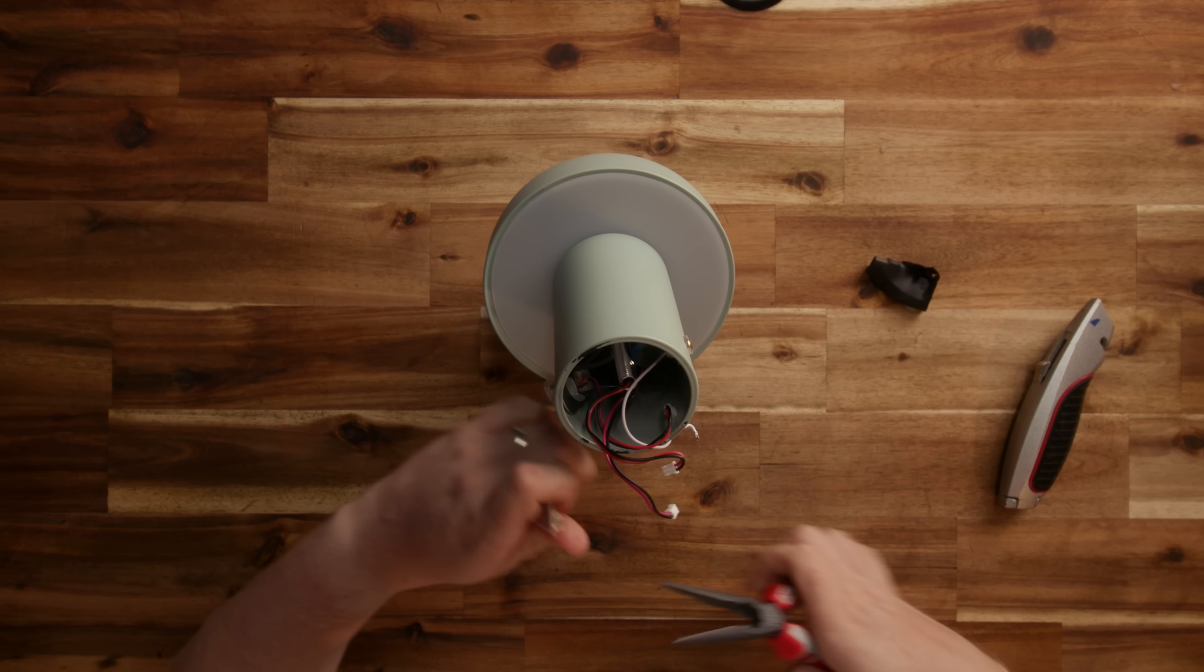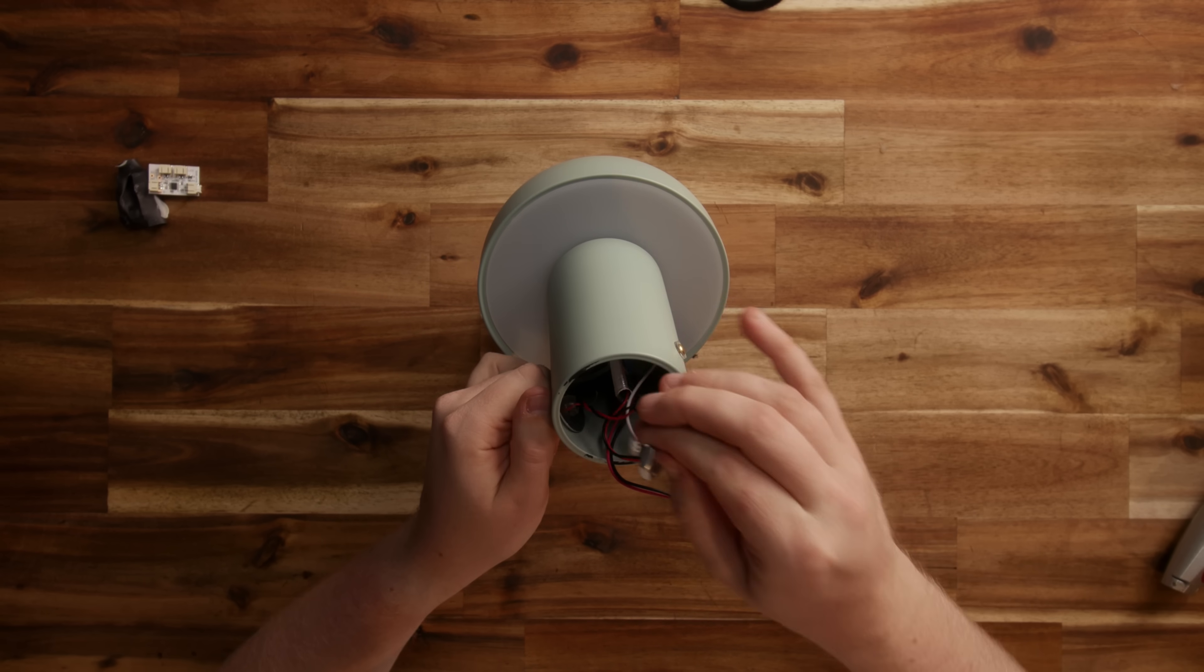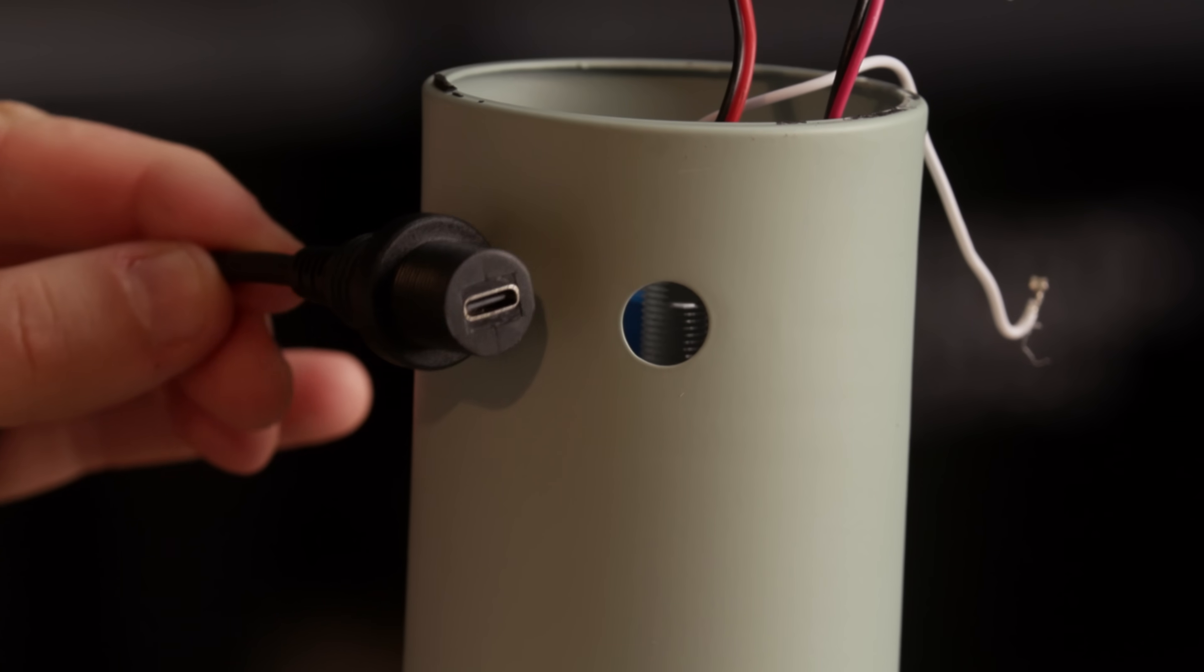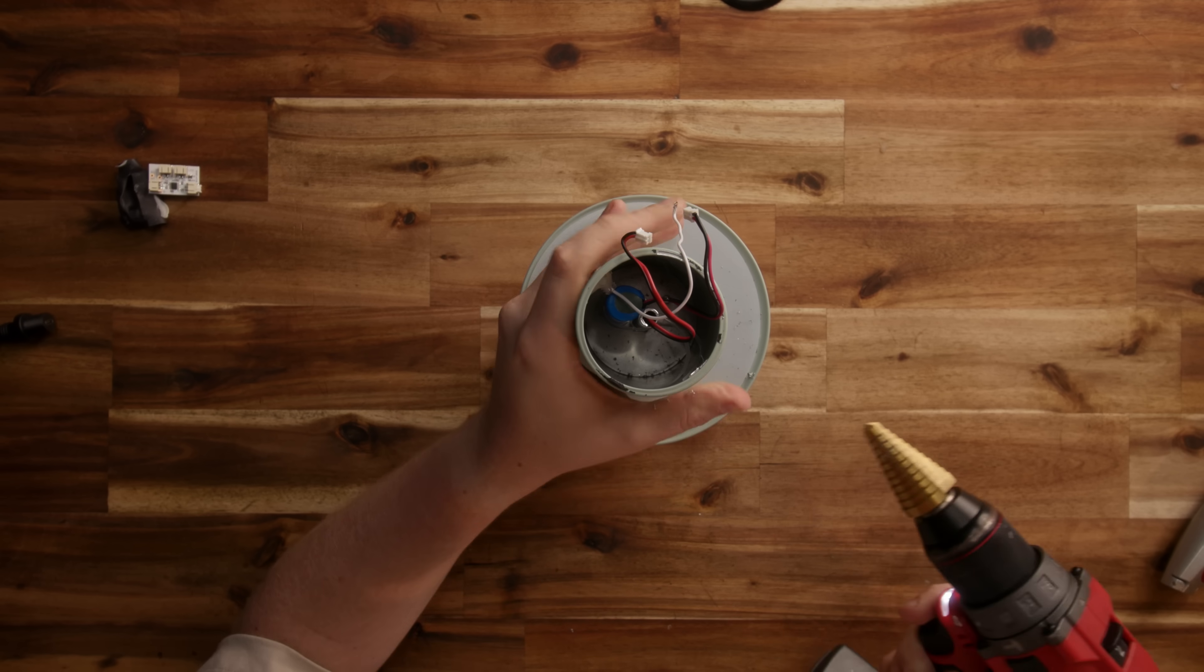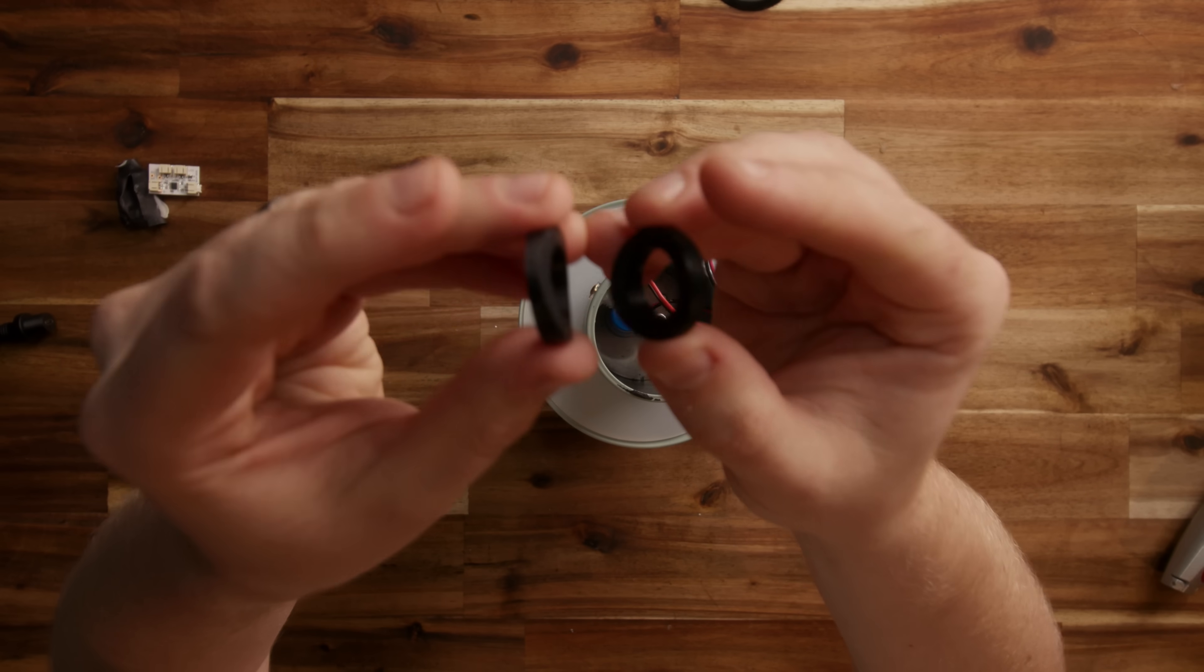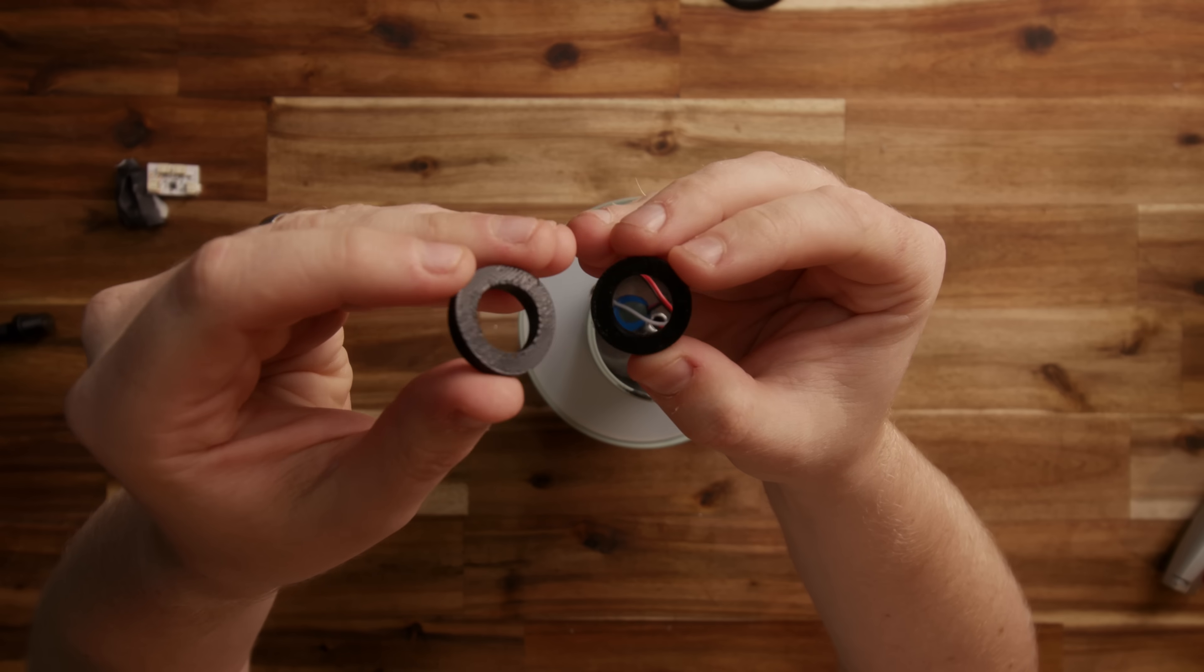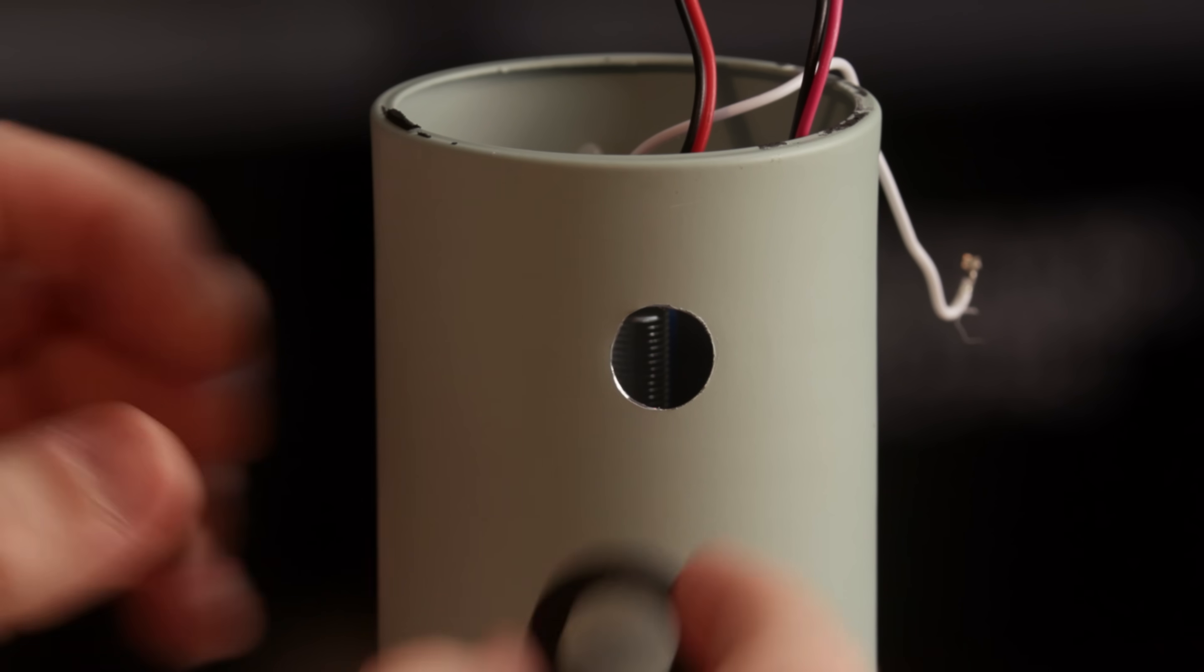First up, solving the USB problem. I ordered some of these short panel mount USB-C extensions that just required me to open up the hole from the existing USB port a little. A good old step drill made short work of that, and these little 3D-printed washers will provide a surface for the nut on the USB-C cable to tighten against, both inside and outside the lamp.